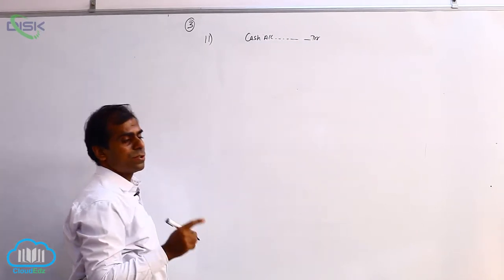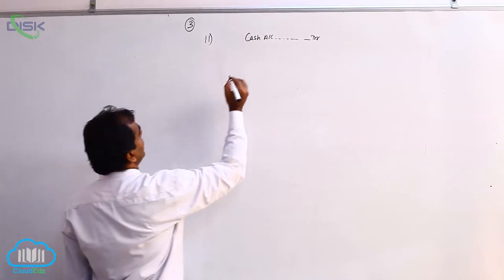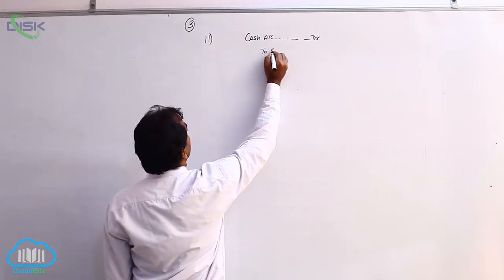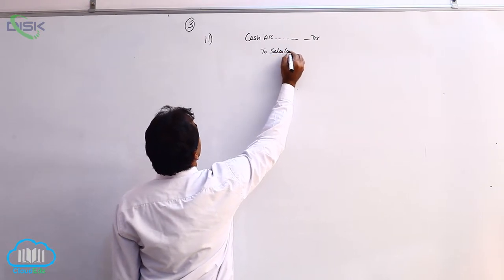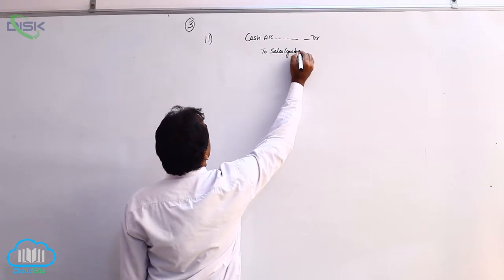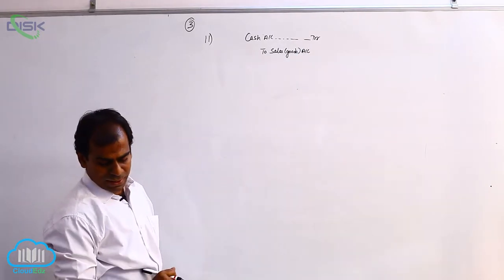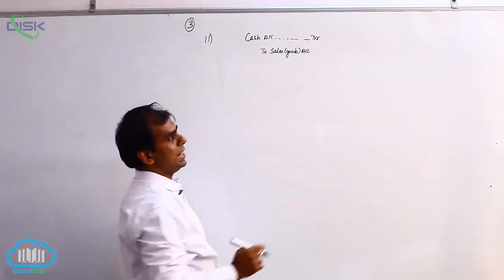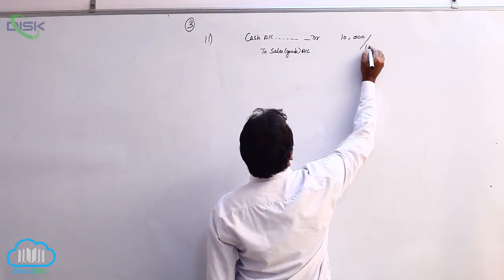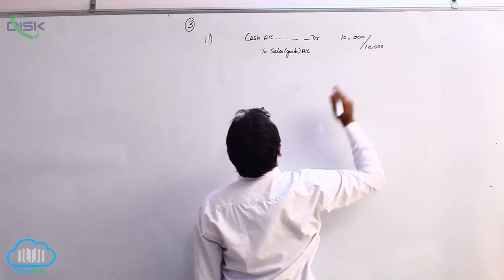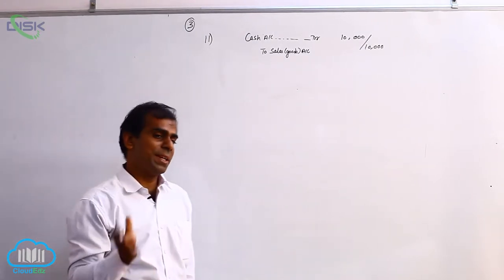Now we are selling goods. Goods are a real account and they are going out, so we credit goods — but we represent the word goods with 'sales'. So we credit the sales account. Therefore the journal entry is: Cash Account Debit to Sales Account, the amount being 10,000. Narration: being goods sold for cash, or being cash sales.